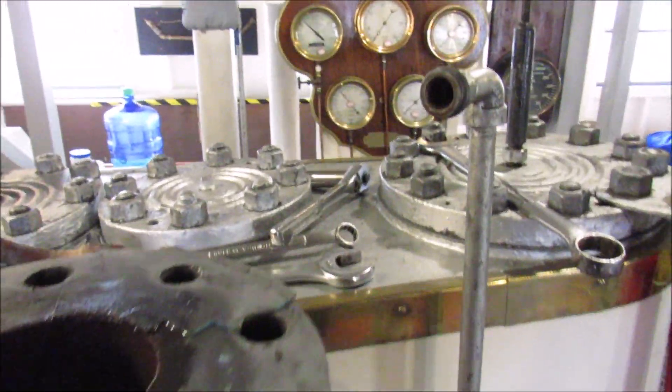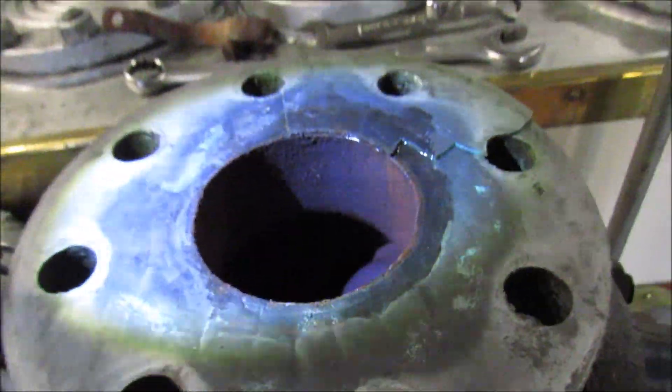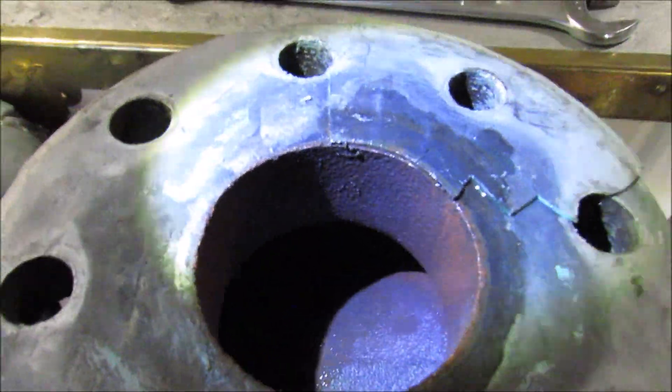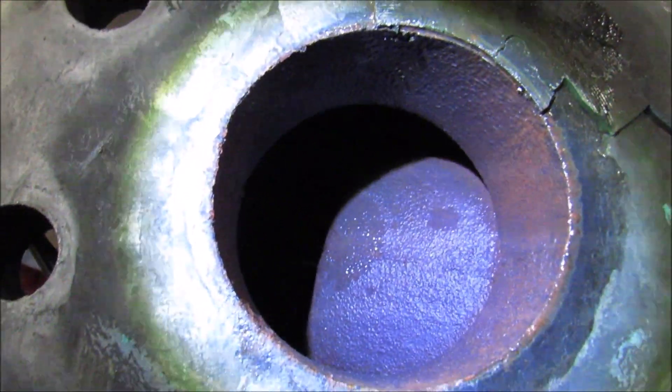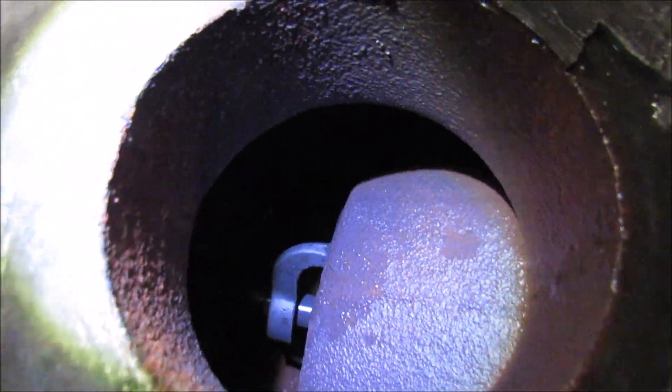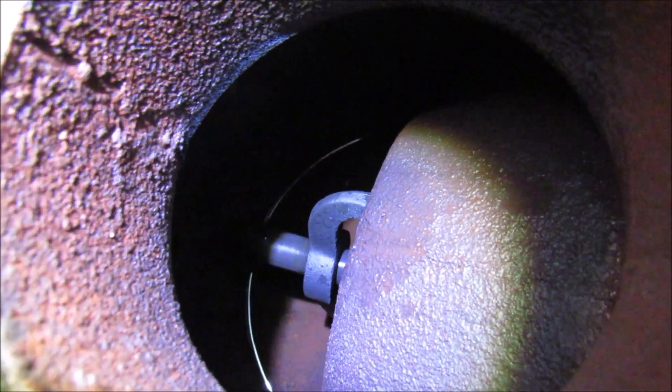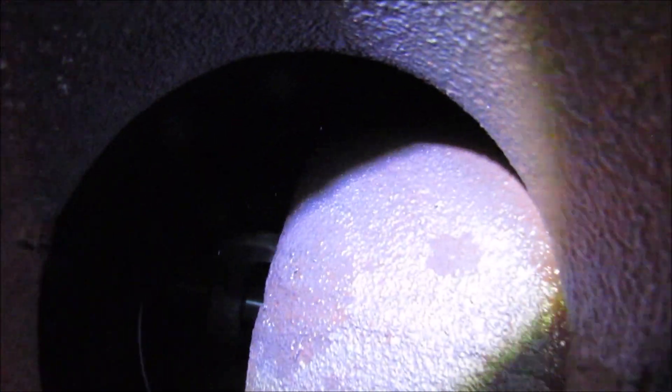But now we can look inside the throttle valve on the ship. It's a pretty simple mechanism. It just moves in and out, opening and closing the hole, allowing more or less steam into the engine. The new one will work exactly the same, it'll just be slightly smaller.